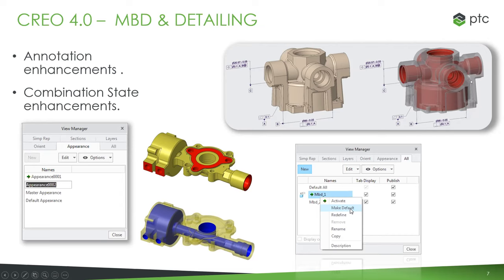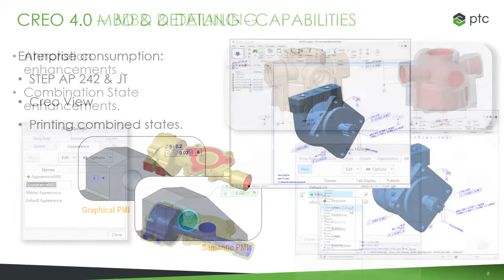You can have certain dimensions called out for the outside and certain dimensions called out from the inside, and your combination state can be set up so it immediately draws the user's attention to exactly what you're referencing. You can also click on the annotation and it'll highlight whatever it's referencing. When you're ready to send these out, the first way is STEP AP 242 — this allows you to save the model as a STEP file including rich content. There's a checkbox when you save as STEP AP 242 that says 'with rich content,' which saves the combination states, transparencies, and all the different annotations in those different states.